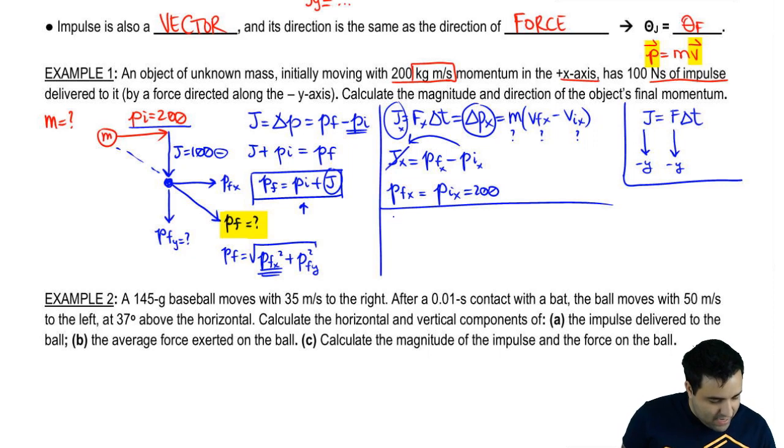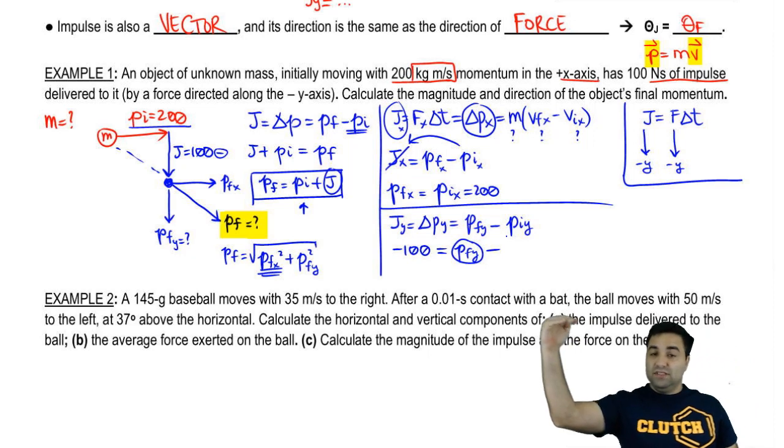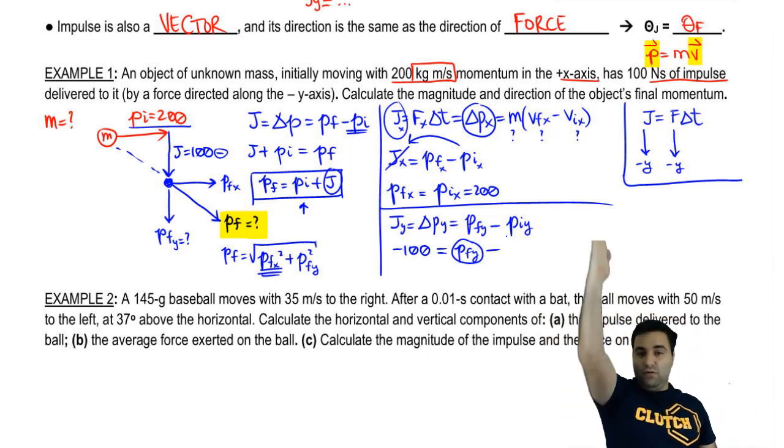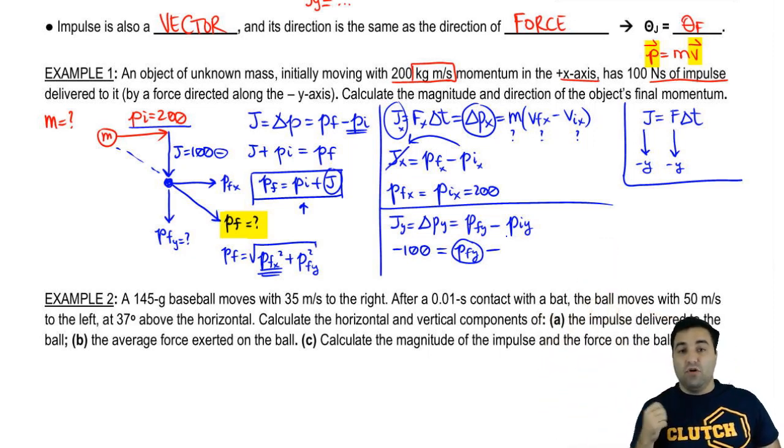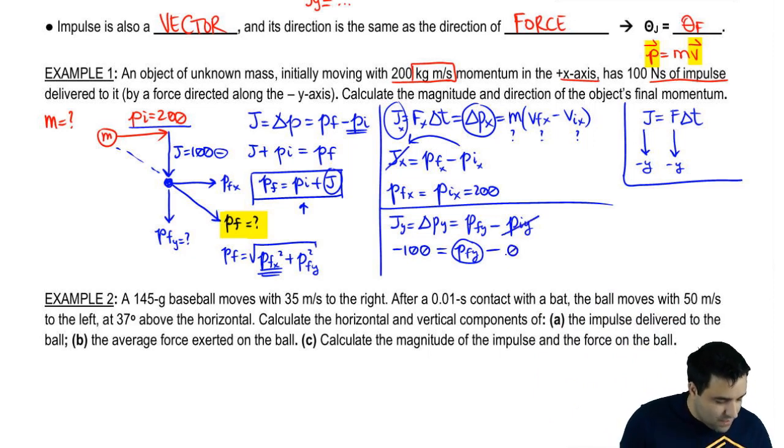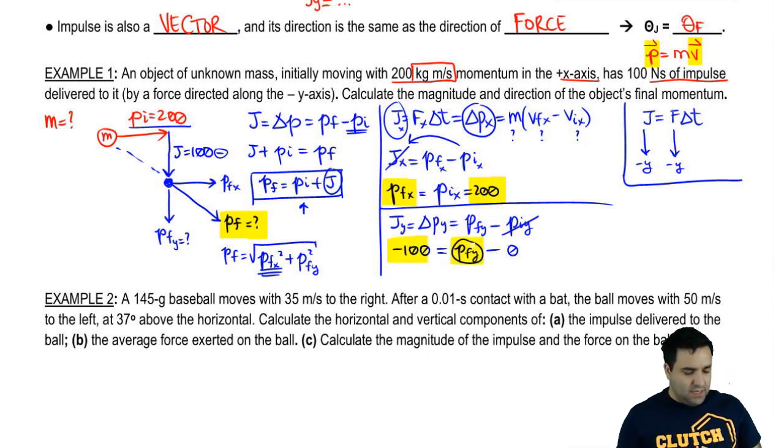For the Y axis, I can write JY equals delta PY, which is P final Y minus P initial Y. There is a J in the Y axis, which is negative 100. The P final in the Y axis is what we're looking for. If you're moving straight to the right, you're not moving up or down. You have no velocity in the Y axis, so you have no momentum in the Y axis. This is just 0. So your final momentum in the X is 200, and your final momentum on the Y axis is negative 100.